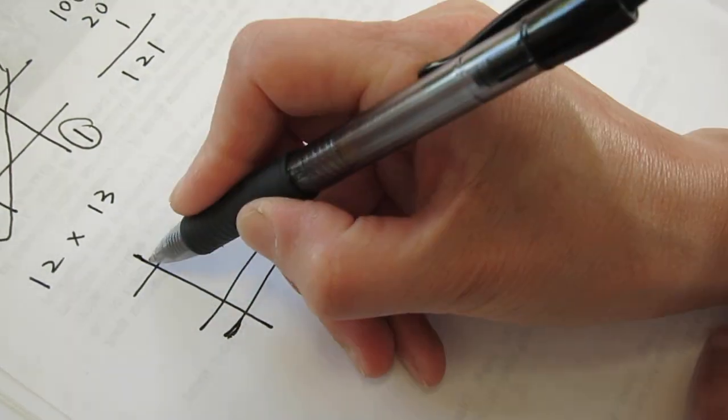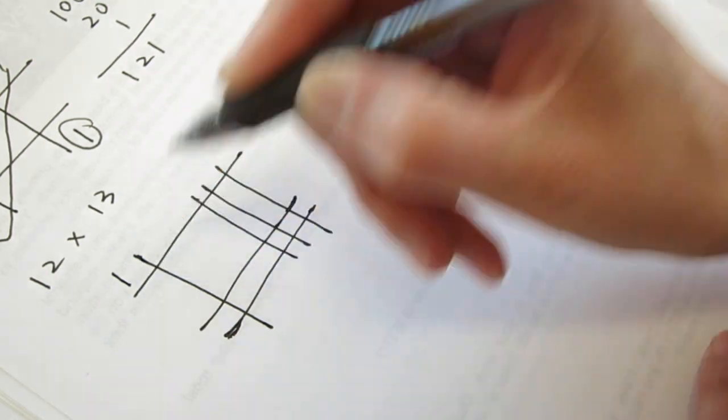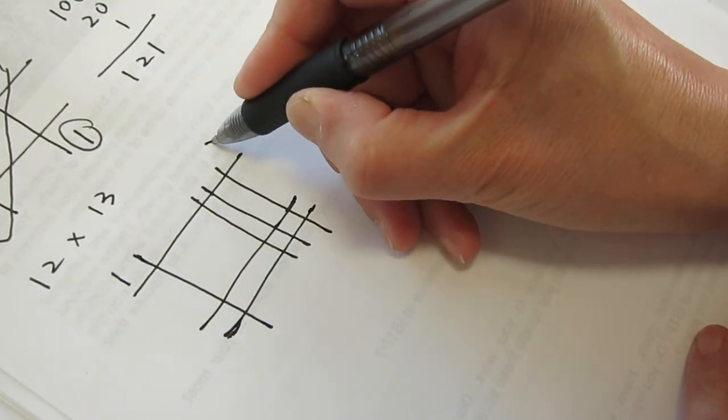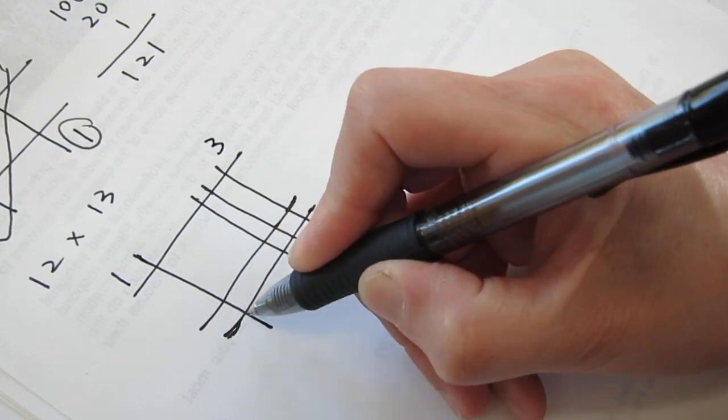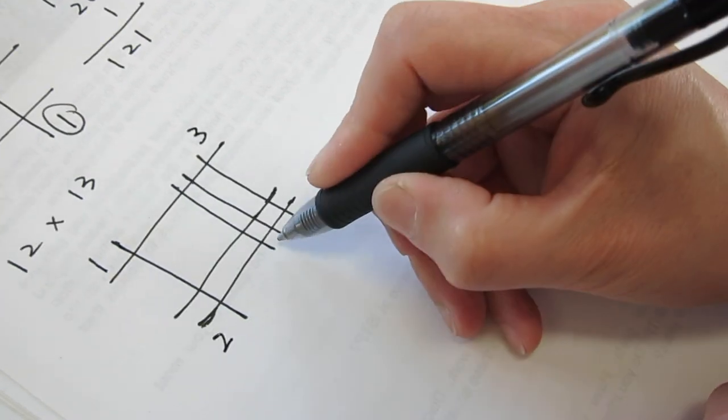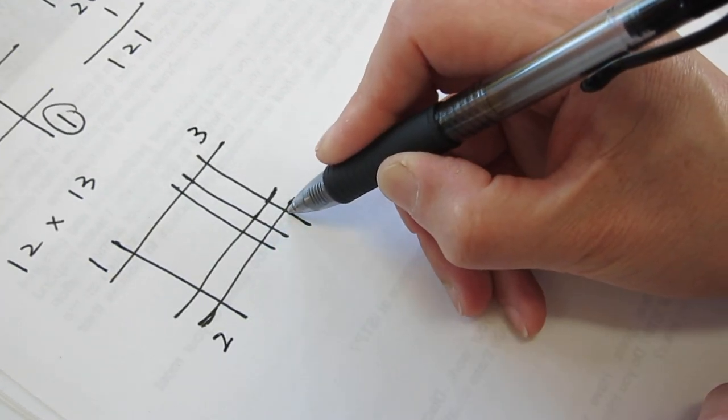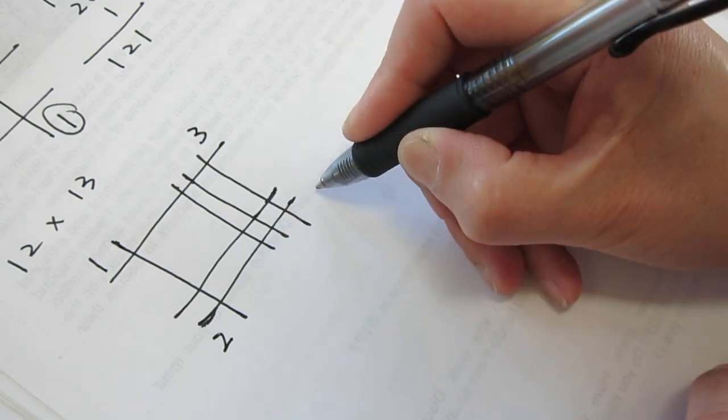Okay, so this is one, one times one. One, two, three, this is three. One, two, this is two. One, two, three, two by three is six.